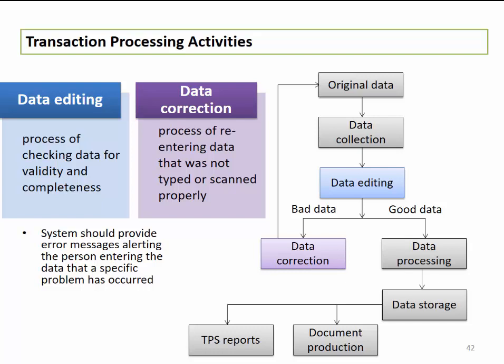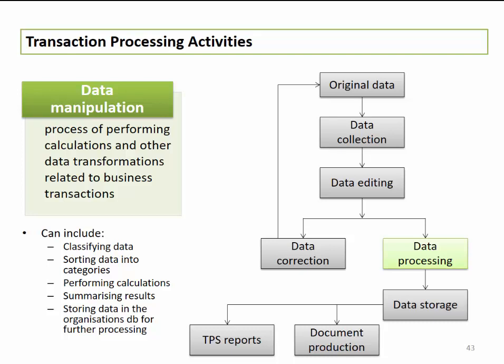If bad data is detected, it goes to data correction — the process where we retype or rescan the information, go back to our original data, recapture it, and it goes through the whole cycle again. If data is considered good, it proceeds to data processing, also referred to as data manipulation — the process of performing calculations and other data transformations related to business transactions, such as determining VAT rates or profit margins. This can include classifying data, sorting into categories, performing calculations, summarizing results, and storing data in organizational databases for further processing.